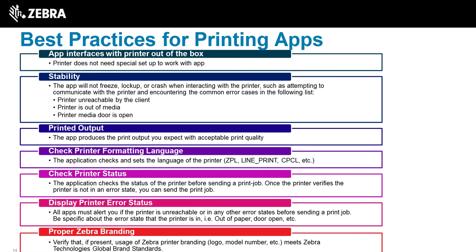Also recommended for testing: check common error cases like when the printer is unreachable — either not connected or off — and error states like out of media or media door open. Building in status checking to show the user whether the printer is available or in an error state has huge value. From a developer perspective, status indicators differentiate your application and provide more value to customers trying to improve their processes.